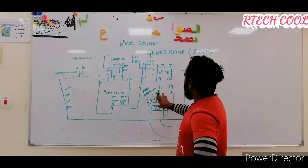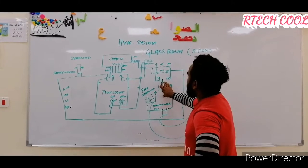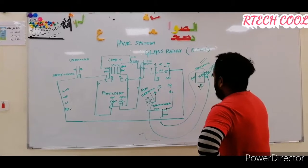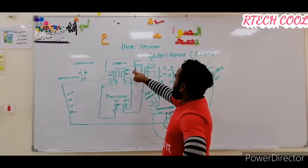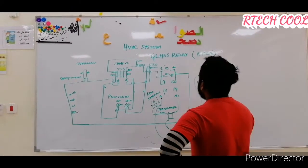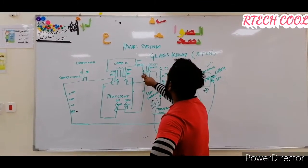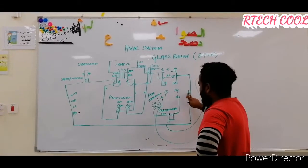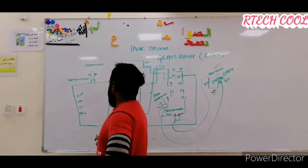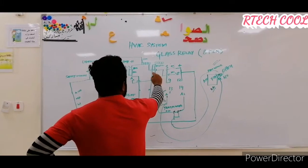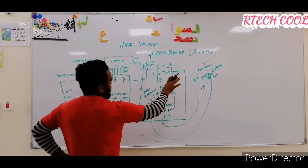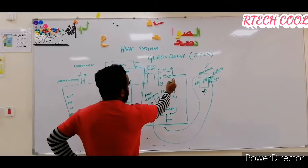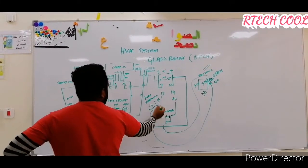When the relay coil voltage is energized, the NC becomes open and the NO becomes NC. Here we are giving line voltage to the NO point. This is a series line — not parallel — one line only. From the line we are taking power and giving it to all protection devices in series.